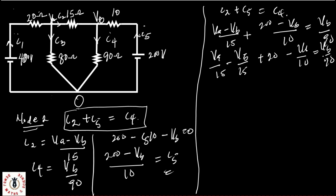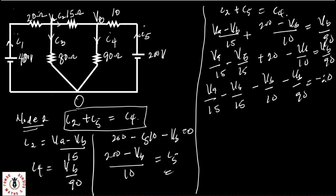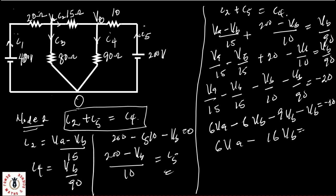Let me split the terms. This gives VA/15 minus VB/15 plus 200/10 — that's 20 — minus VB/10 equals VB/90. Bringing VB terms to the left and 20 to the right: VA/15 minus VB/15 minus VB/10 minus VB/90 equals minus 20. Multiplying through by 90: 6VA minus 6VB minus 9VB minus VB equals minus 1,800. So that this is 6VA minus 16VB equals minus 1,800. Let's call this Equation 2.